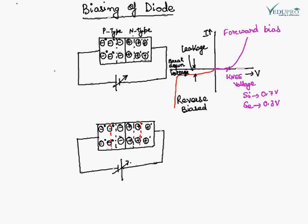From the V-I characteristic of a diode, it is very clear that in forward bias, the current is going to flow and the diode behaves as a short circuit. In reverse bias, there will be no current as the diode behaves as an open circuit. If we connect the positive battery to P-type and negative battery to N-type, it is a forward bias condition. When the P-type of the P-N junction is connected to negative and the N-type is connected to positive of the battery, it is a reverse bias condition.